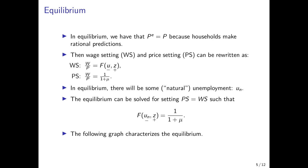Now we can set these two expressions equal to each other, which gives the equilibrium of the labor market, and one can solve this for the unemployment rate. If we know a functional form of F, we can do this explicitly; otherwise we can do it implicitly and describe the equilibrium on graphs. What is important here is that U at equilibrium is the equilibrium unemployment, called UN because it is referred to in the textbooks as natural unemployment.